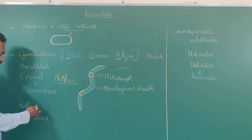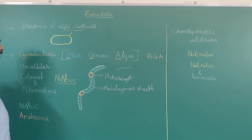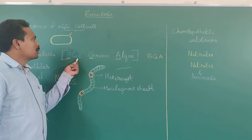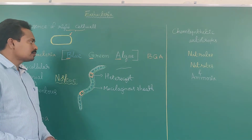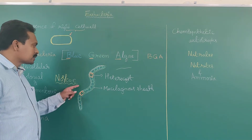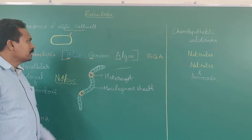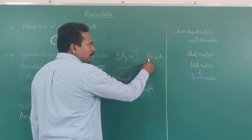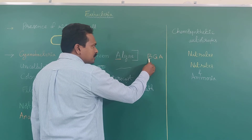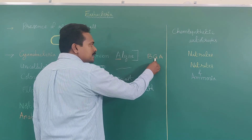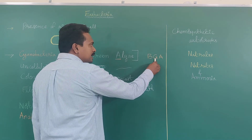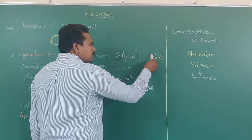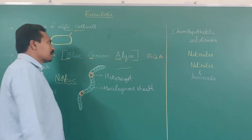Nostoc and Anabaena are examples of cyanobacteria, which are commonly known as blue-green algae. BGA stands for: B = Blue, G = Green, A = Algae. BGA means blue-green algae.